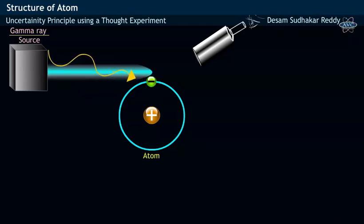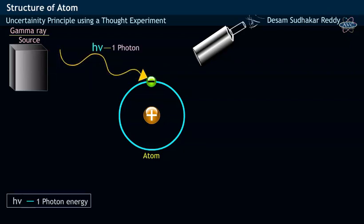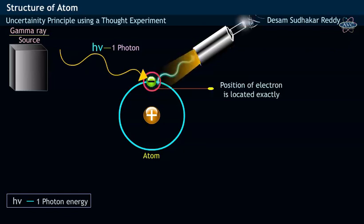After coming in contact with the electron, the light having at least one photon energy gets diffracted and later enters into the microscope. This diffracted light entering the microscope allows us to locate the position of electron exactly. That is, there is no uncertainty in position.